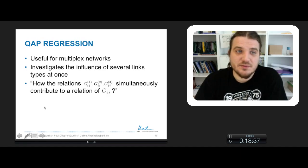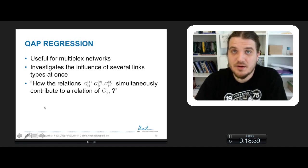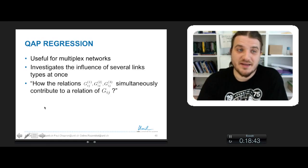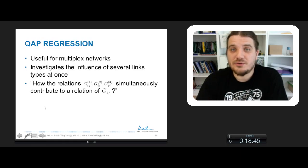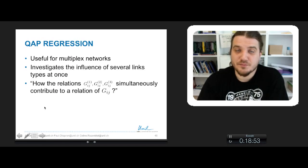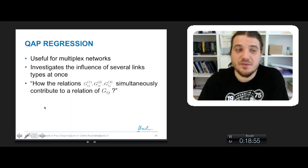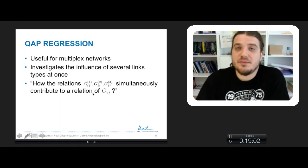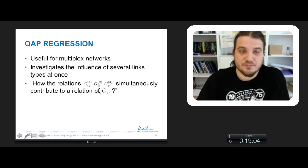QAAP regression is useful when you have multiplex networks, when you have several types of links between the same node set. You make some regression to investigate the influence between several link types on another network. Basically, the question could be how the relations that I have in my network G1, G2, and G3 may contribute to the relation in my base network G.